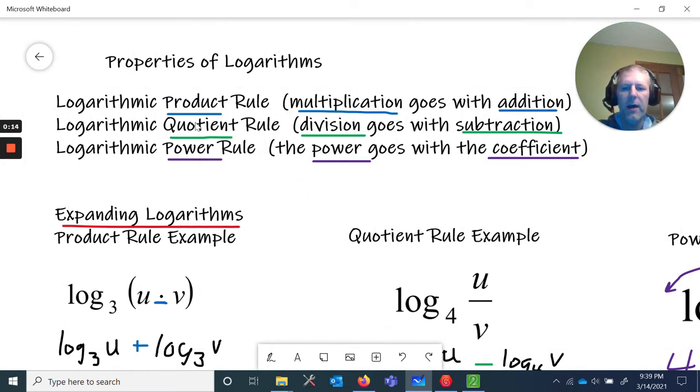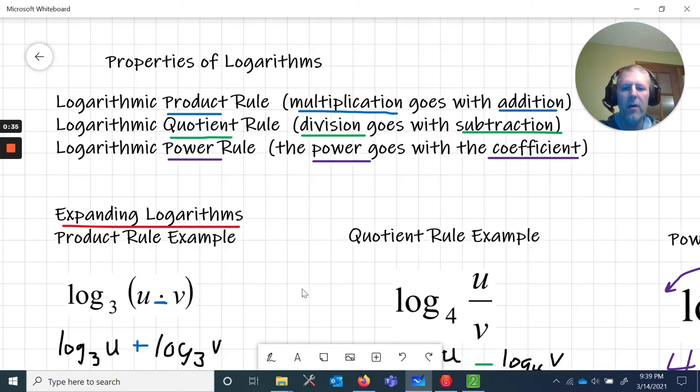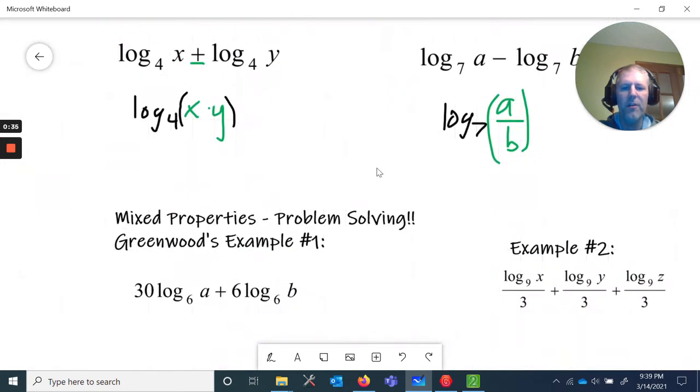So again, just a quick refresher: product rule is expanding or contracting multiplication - it expands to addition, addition contracts to multiplication. Quotient rule: division expands to subtraction, subtraction condenses to division. And power rule: powers expand to coefficients and coefficients condense back down to powers. Okay, so we did some examples in the last video, go check that out if you need some guidance.